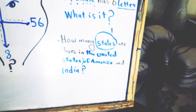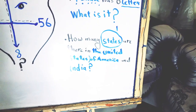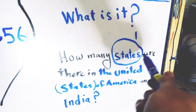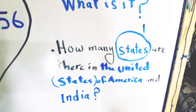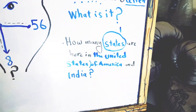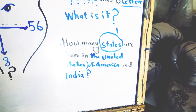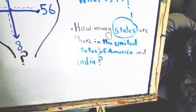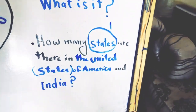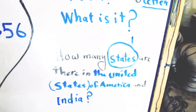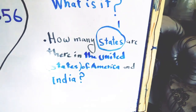Now here is the next example — use your magic reasoning and power of observation to reach the answer. How many states are there in the United States of America and India? Use your power of observation. If you apply it here, you will know that it is not the number of states which is required — what is required is the word itself.